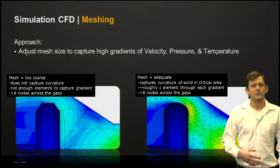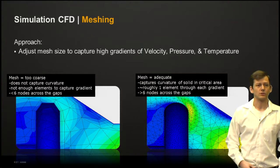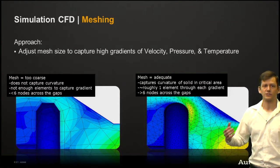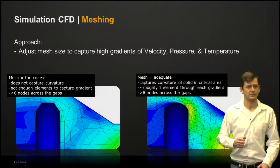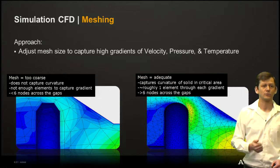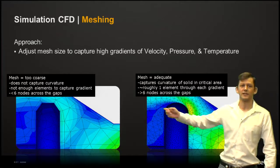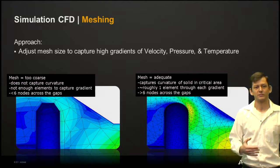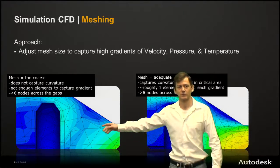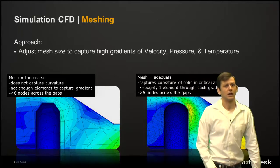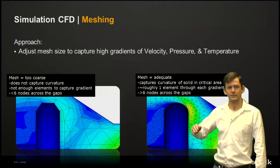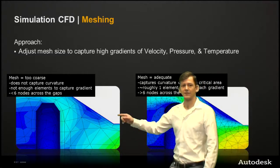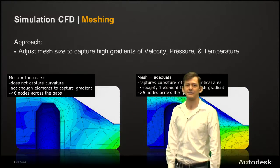To talk about what we're looking for with our meshing and how it pertains to the results, we want to make sure that we are adjusting the mesh size to capture those steep gradients, whether it's with the velocity gradient, thermal gradients, or even pressure. Here on the left you'll see that this is a flow through a small channel. The mesh is definitely too coarse here. We're not representing the shape of this geometry very well. It doesn't look round. The flow gradient across the gap itself isn't being captured very well. You can also see that we have a small recirculation zone right here that isn't being captured either.